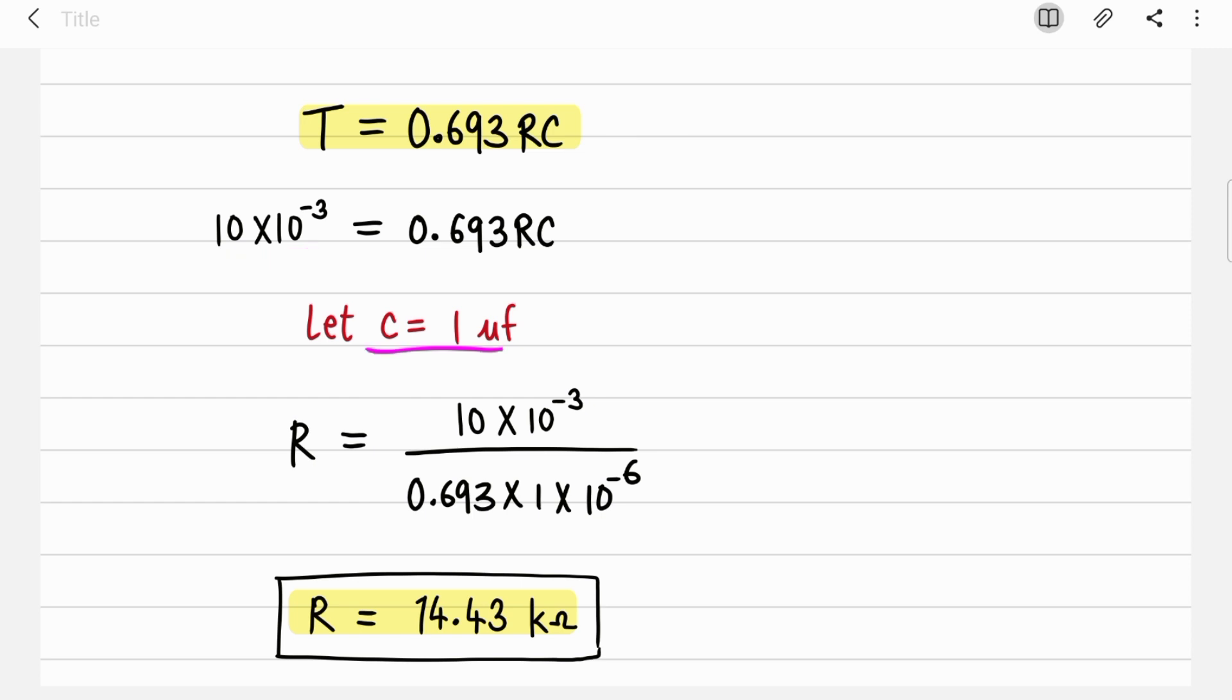In design questions you have to assume a capacitor value. I'm assuming 1 microfarad. So just send this 0.693 and C on the left-hand side so R will remain alone. C is 1 microfarad. Put this everything in calculator and R will come out as 14.43 kilohms.